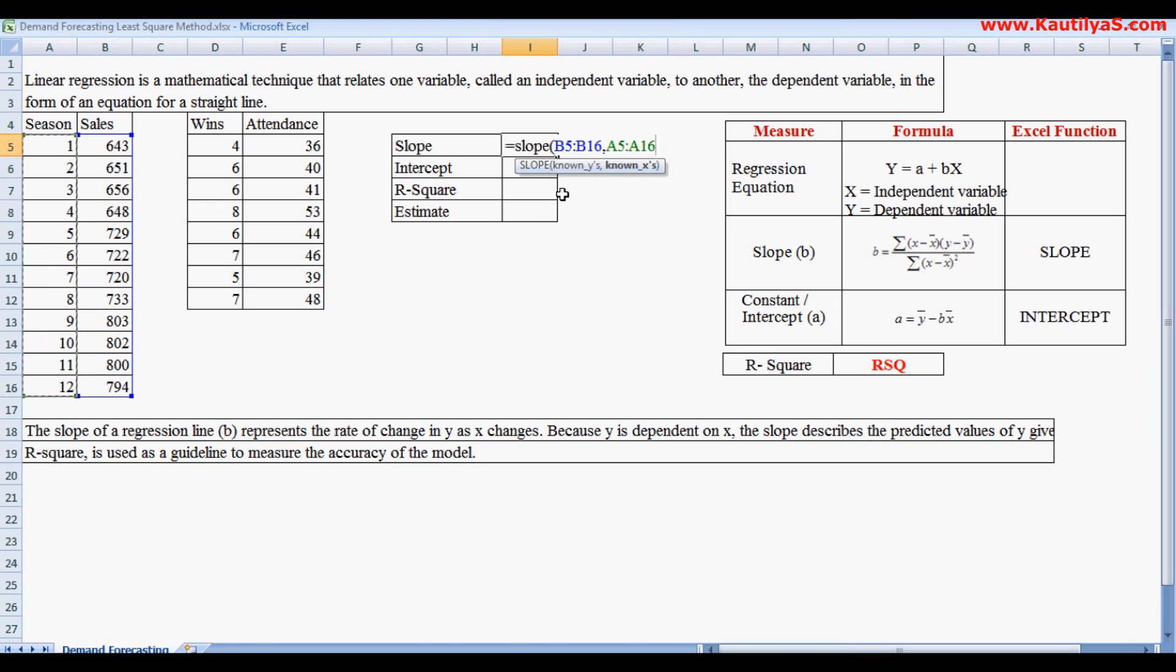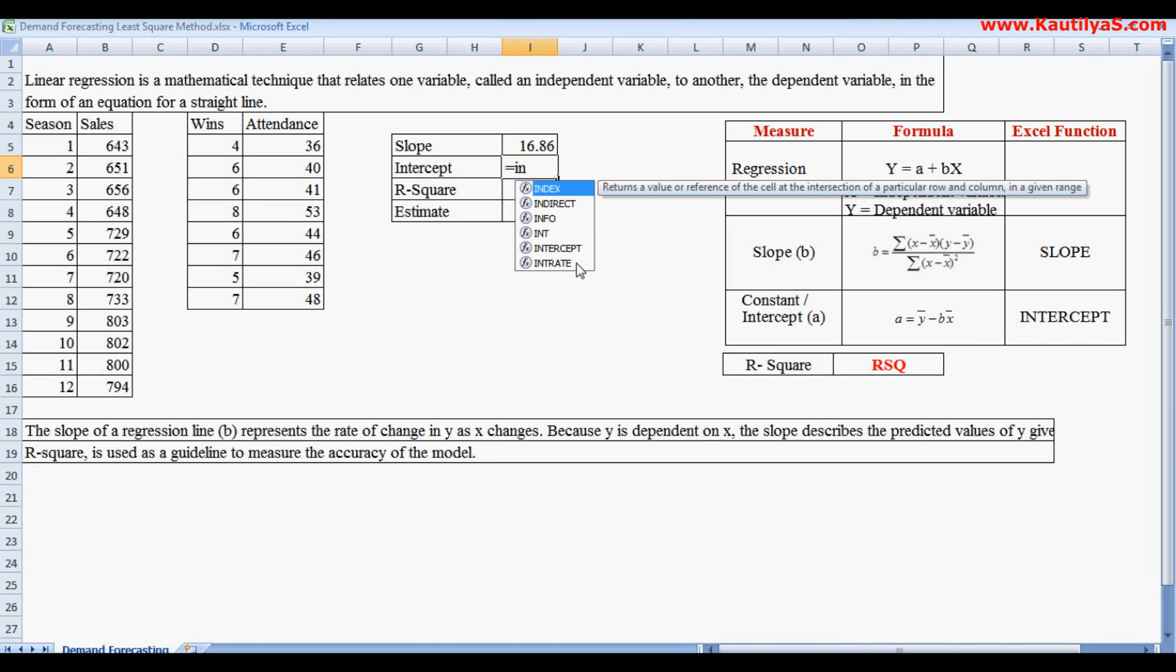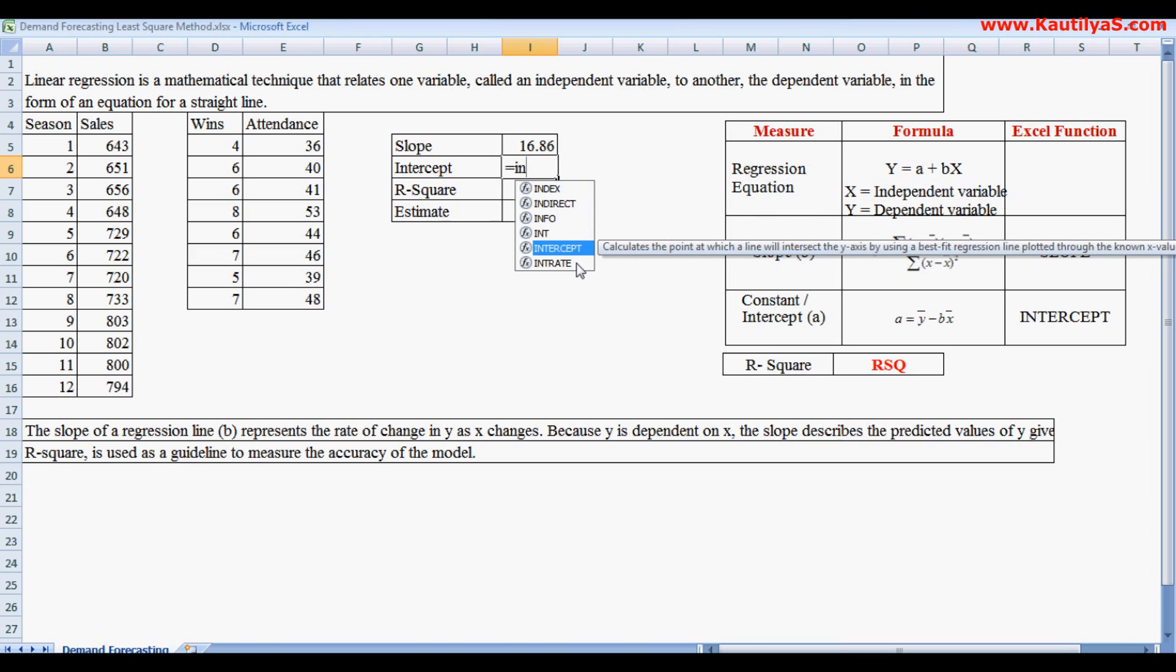The intercept normally uses this equation, but we use the Excel function INTERCEPT. Simply go down, select this by clicking tab, enter the known Y values and known X values. You got the intercept.